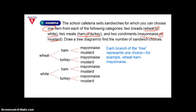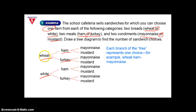This is what your tree diagram would look like. Your first choice is between wheat and white. After you choose your bread, you choose ham or turkey. No matter what bread you pick, you then pick mayonnaise or mustard. Each branch of the tree represents one choice — for example, wheat, ham, mayonnaise is just one sandwich. To count total options, count the last branch: 1, 2, 3, 4, 5, 6, 7, 8 different choices.